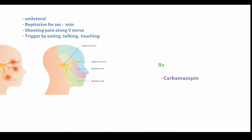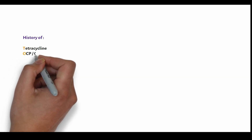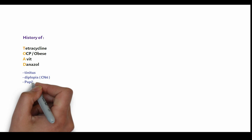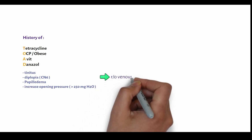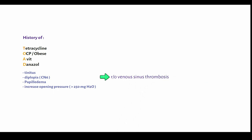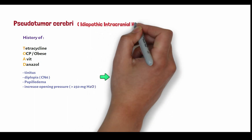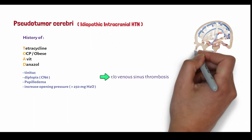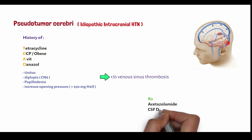If a patient presents with headache and a history of using tetracycline, OCP, or is obese, using vitamin A or azoles, with associated features like tinnitus, diplopia, papilledema, or increased opening pressure greater than 250 mm H2O — we must rule out venous sinus thrombosis using MR venogram. After ruling that out, this is pseudotumor cerebri, also called idiopathic intracranial hypertension. It is a rare condition mimicking brain tumor symptoms, with increased CSF pressure, leading to debilitating headache and visual disturbances. It can be treated with acetazolamide and CSF drainage.